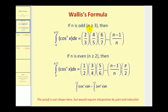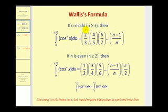If n is greater than or equal to three, then this definite integral is equal to two-thirds times four-fifths, and so on, all the way out to n minus one over n, and the product of these fractions will give us the value of this definite integral. Notice the numerator is a sequence of even whole numbers all the way out to n minus one, and the denominator is the sequence of odd whole numbers all the way out to n.